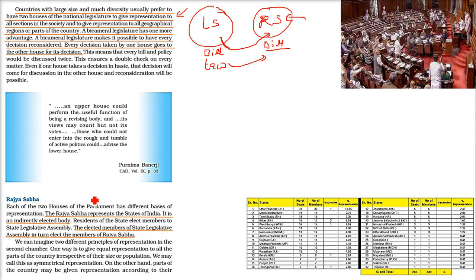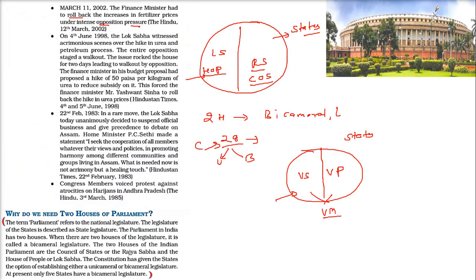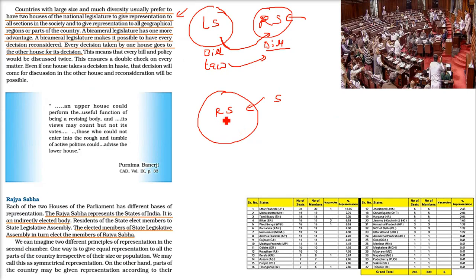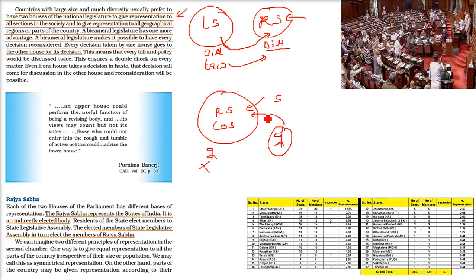Coming to Rajya Sabha — it represents the states, that is why we call it the Council of States. The elected members of state legislative assemblies elect the members of Rajya Sabha. So you and I are not directly involved; we don't vote. The MLAs of a state will elect the Rajya Sabha members.